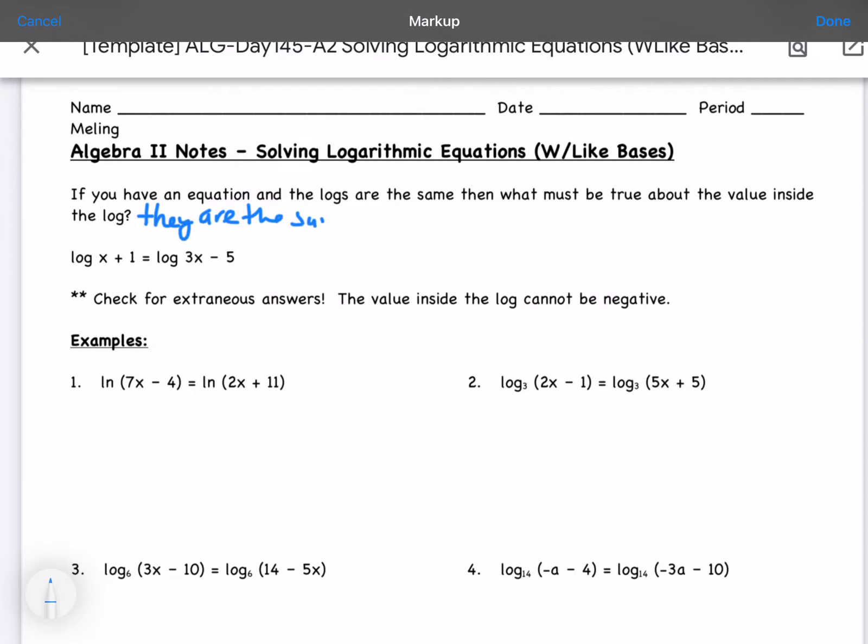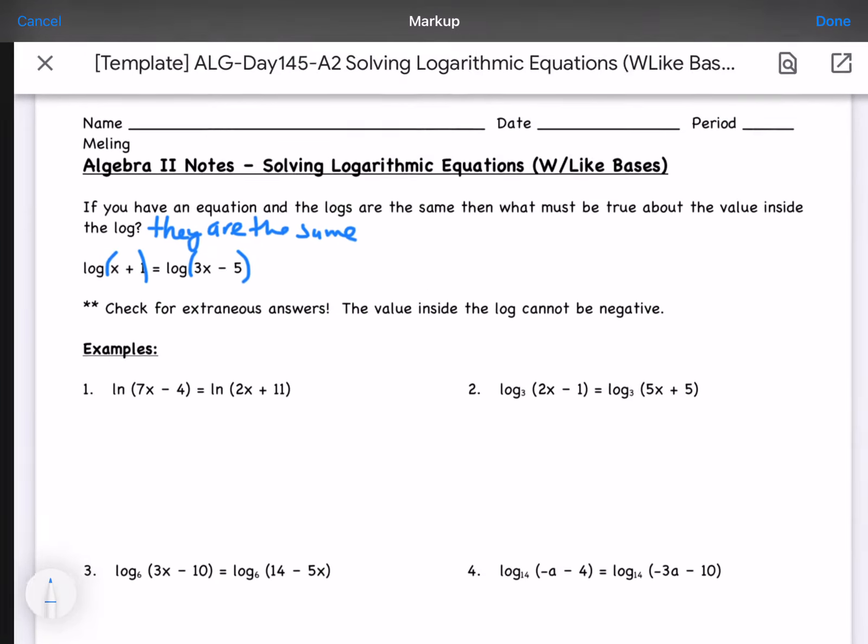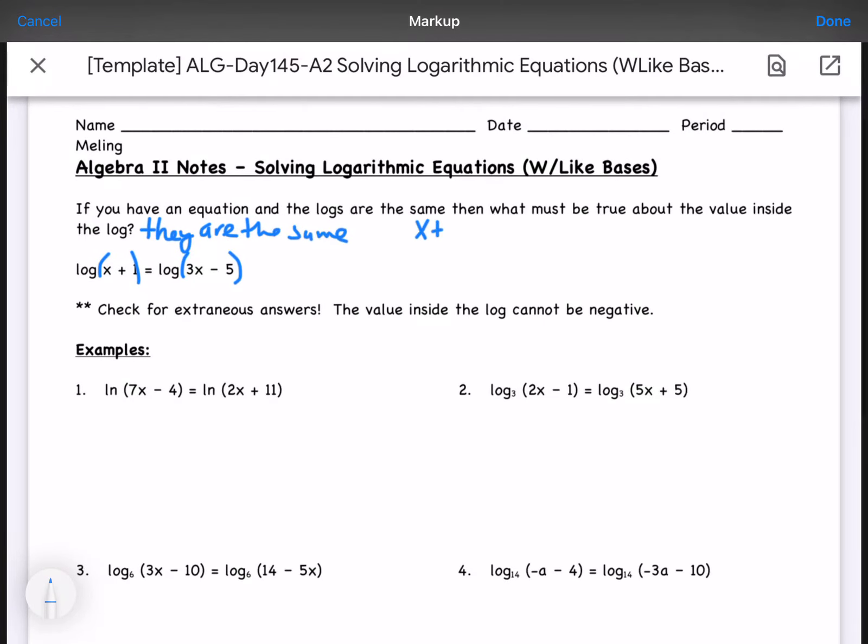So if we have log of x plus 1 and log of 3x minus 5, we would set x plus 1 equal to 3x minus 5. And we would solve from there, we'd end up with x equals 3.